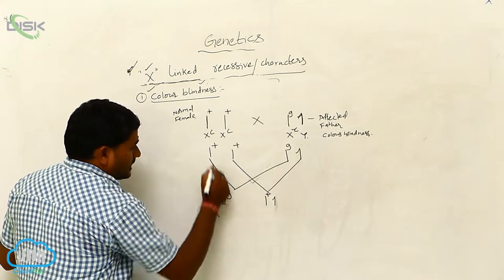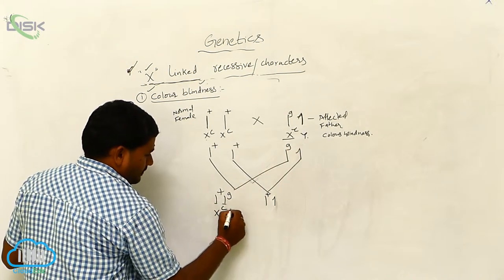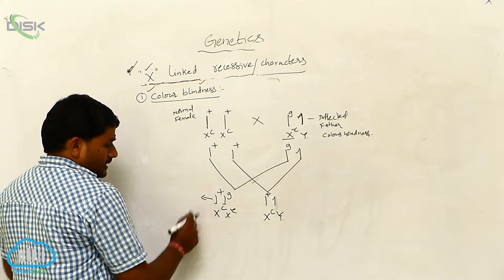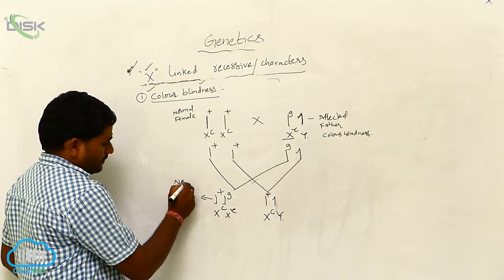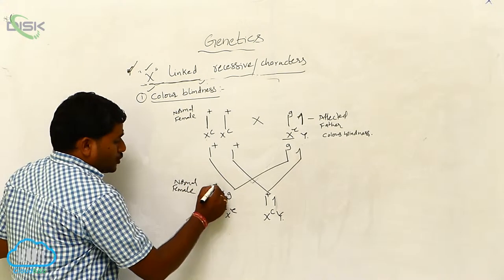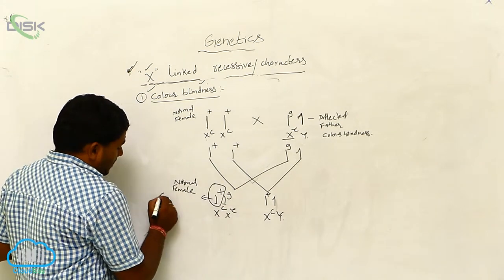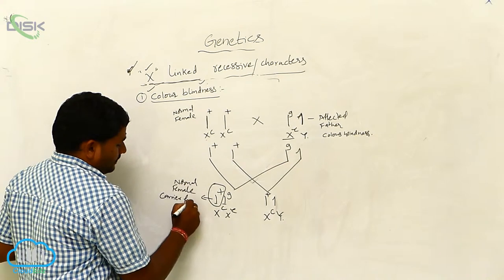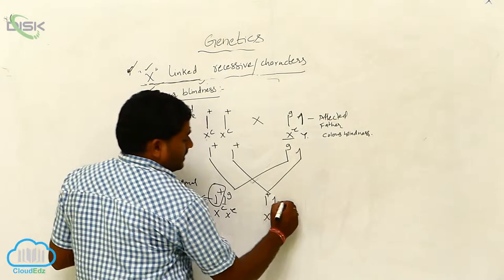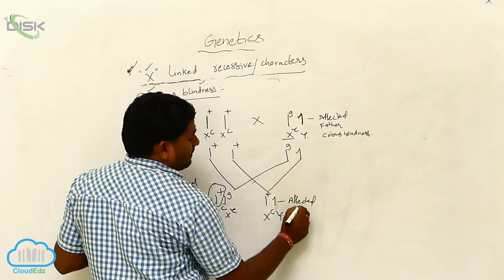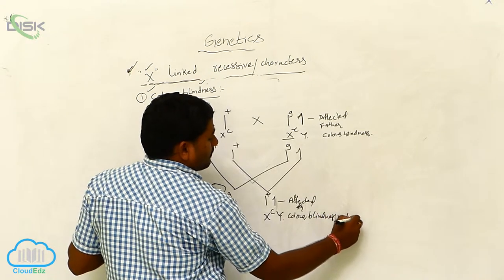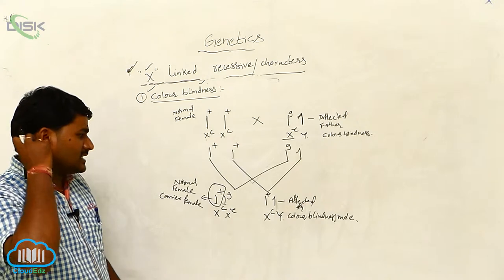You can call it as X capital C and X small c. So, X capital C and Y. Normal female — whenever one recessive allele is present, that woman is called as carrier female. Next, here affected male: affected male are color blindness males.